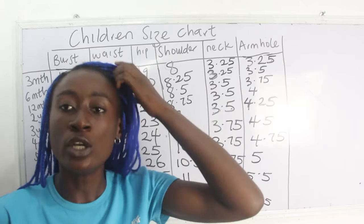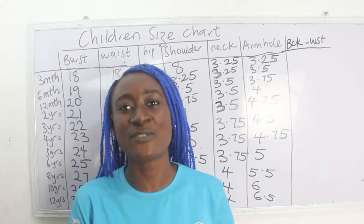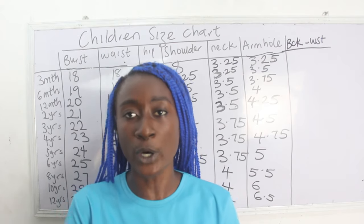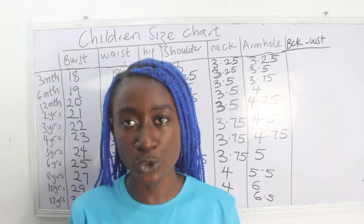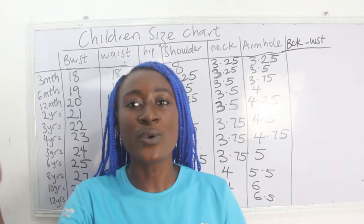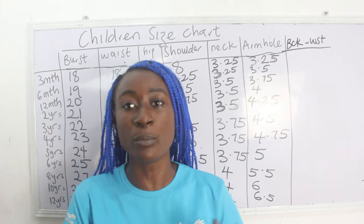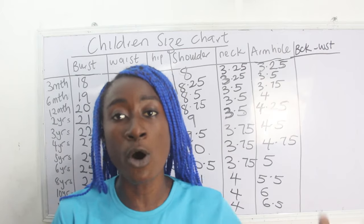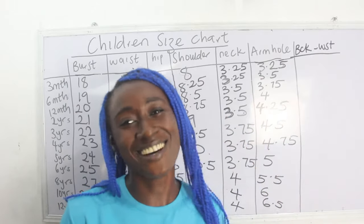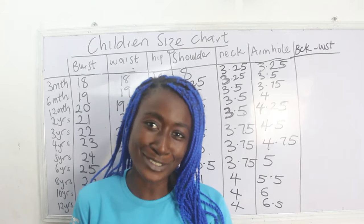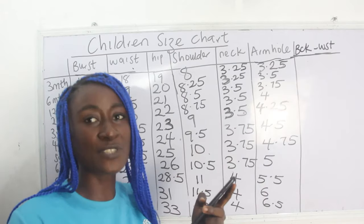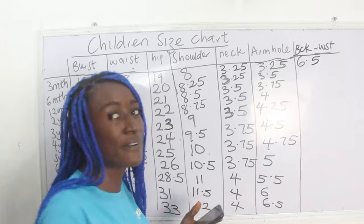An additional measurement I want to include is the back-to-waist — from the shoulder to the waistline. This is especially important when making dresses like ball gowns, which are the most common children's dress style. You need to know the shoulder-to-waist measurement to establish the bodice and where the ball effect begins. I apologize for not including this earlier.